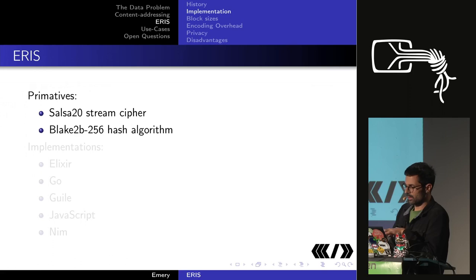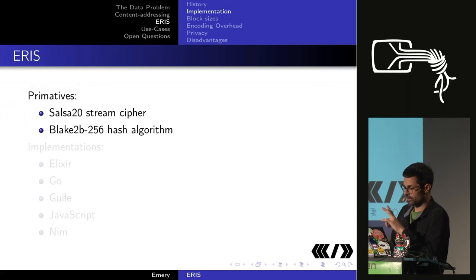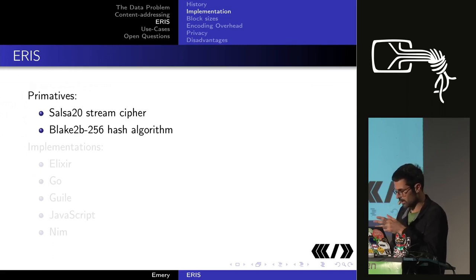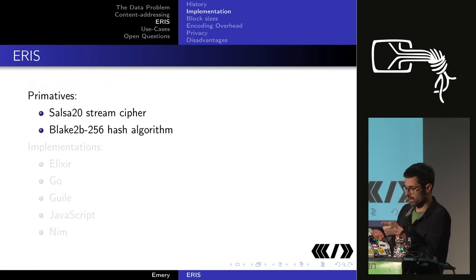Eris is built with two cryptographic primitives: the Salsa20 stream cipher and Blake2b. Blake2b is inspired in part by Salsa20, so they're closely related — and both quite fast. We already have implementations in a number of relatively high-level languages.